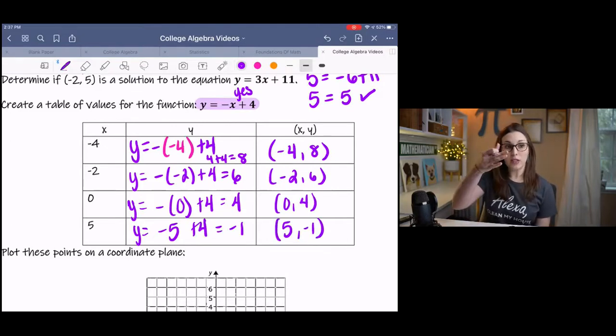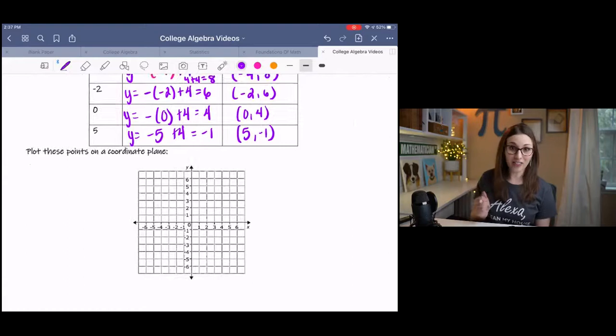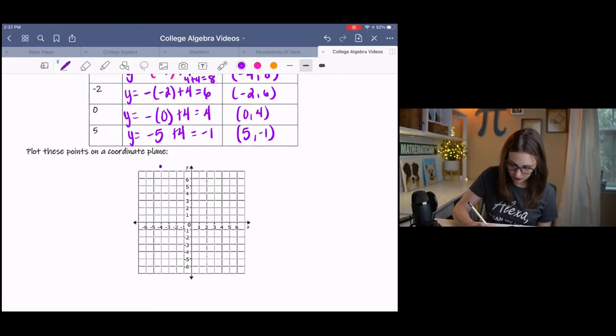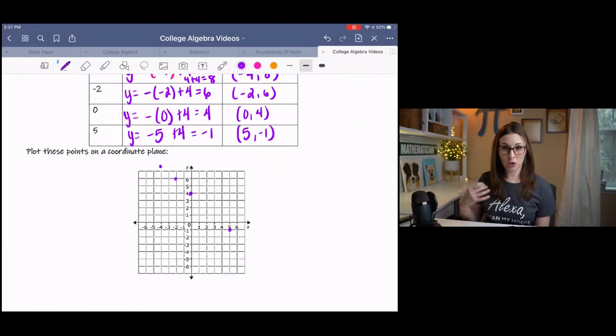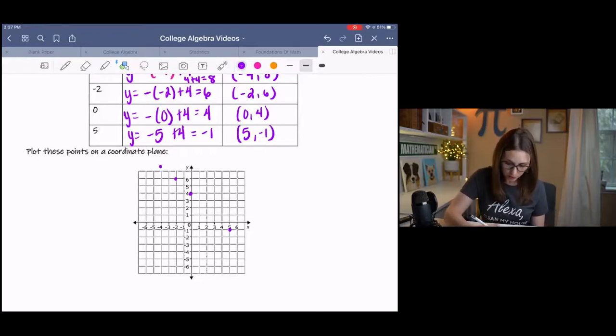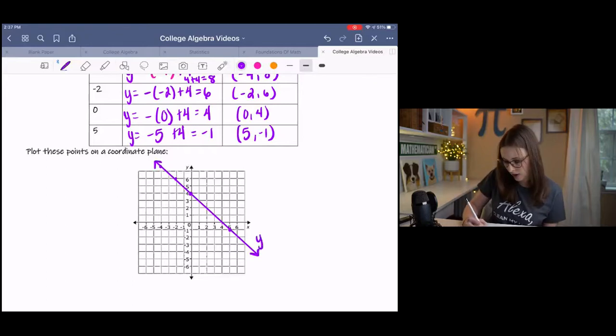Now we have this set of points. We can use our set of points to draw our function. We have negative four, eight, which is actually off the graph a little bit. Negative two, six, zero, four, five, negative one. Hopefully at this point, you can kind of see a trend in these points. Keep in mind that these are not the only points on this line, they're just some of the points that I chose. If you had chosen different points, you would still end up with this line because they all are based on that equation.